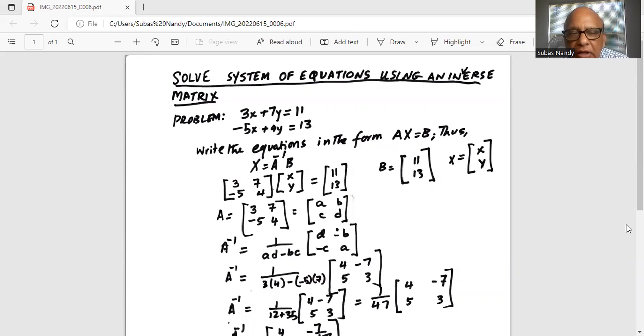Matrix X can be written with x in the first row and y in the second row. Similarly, on the right-hand side, matrix B is 11, 13. It's a one column, two row matrix. Both X and B are one by two matrices, whereas A is a two by two matrix.